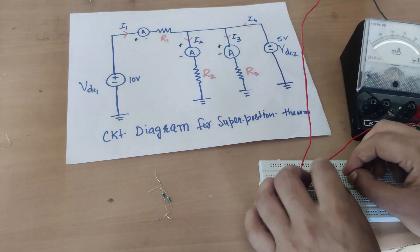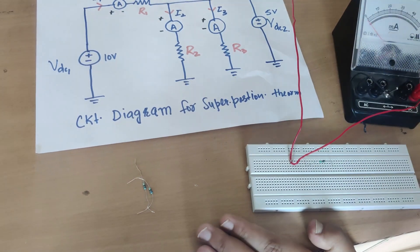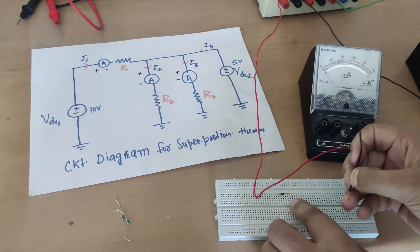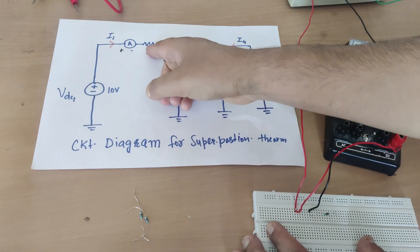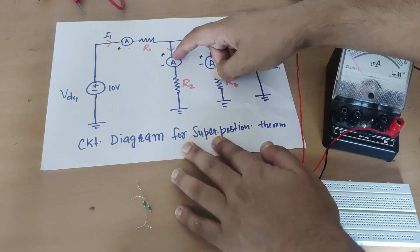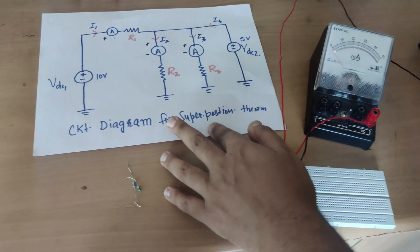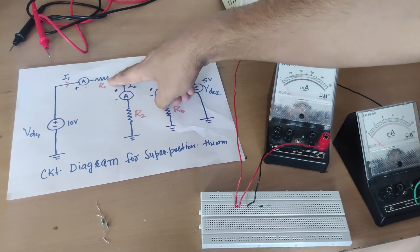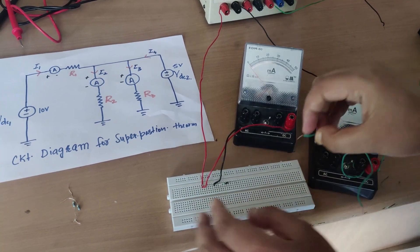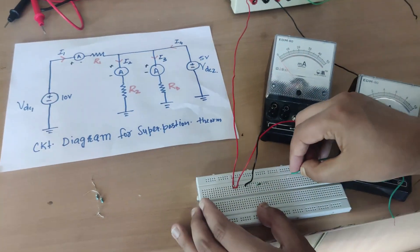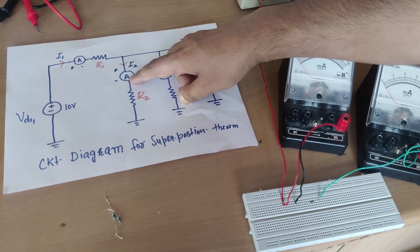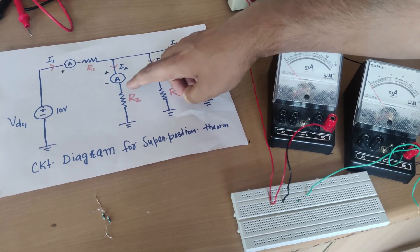The 1 kΩ resistance is placed here on the breadboard. One terminal is connected with the ammeter negative, and I connect the ammeter negative to one end of R1. Up to here the circuit is complete. Then the other terminal of R1 is connected with the positive terminal of the second ammeter, which in turn connects to R2. I bring a second ammeter and connect its positive to the other terminal of R1.